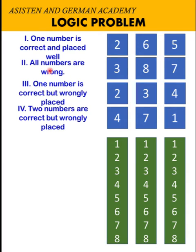So let's go to the second statement. All numbers are wrong. So we can eliminate this 3, we can eliminate the 8s, and we can eliminate the number 7s.